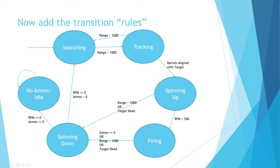There are two reasons we leave the spinning up state: either the target goes out of range or is dead, in which case we need to spin down; or the barrel speed goes over 500 RPM — the barrels are spinning fast enough — and we start firing bullets. We'll sit in the firing state firing bullets until our ammo is zero, the target goes out of range, or the target is dead. Rather than jumping straight back to searching, the guys upstairs said to do a spinning down animation — make the barrels slow down.